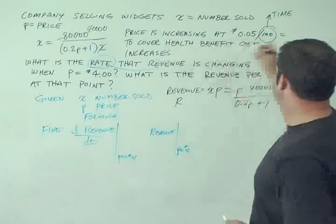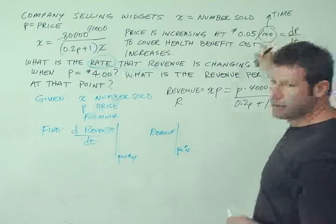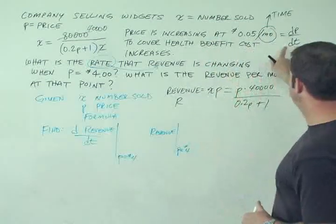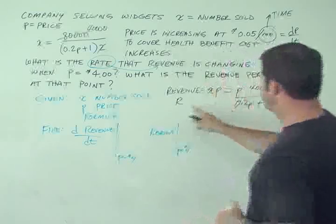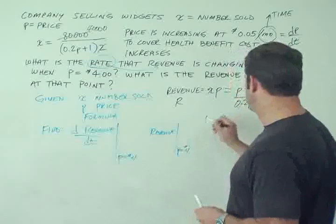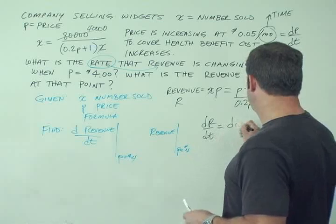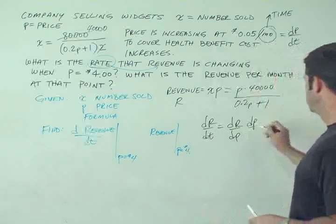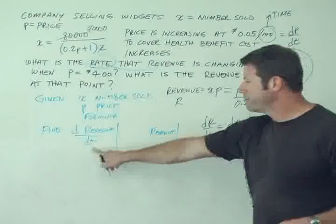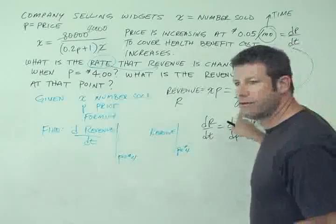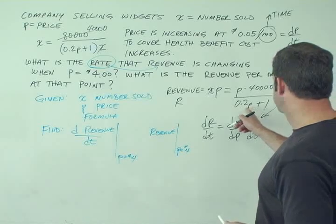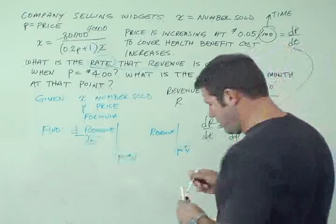It's a derivative of price. This is dp dt. Price is changing per month. So I have a dp dt term. So that helps. But still, if I want dr dt, all I have here is r versus p. But we can use the chain rule. dr dt is dr dp times dp dt. This I have. This is what I want. This is my first answer. And this I can find by taking the derivative of this thing right here using the quotient rule, I guess. So now we just have to solve it.